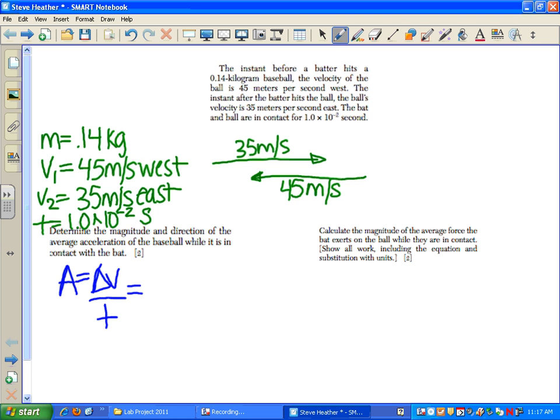So it starts off going east, so it'd be 35 meters per second minus negative 45 meters per second because it's going west, over 1.0 times 10 to the negative 2 seconds.